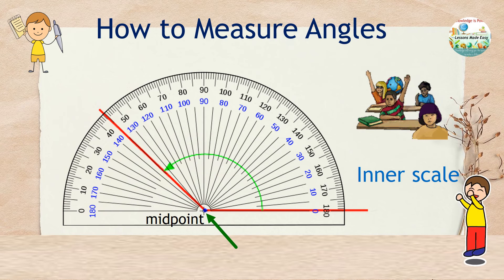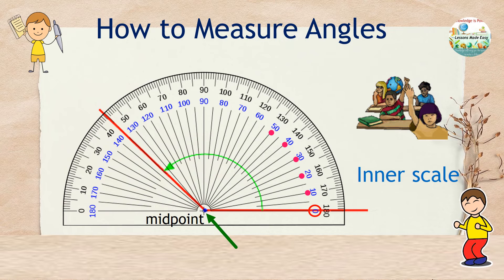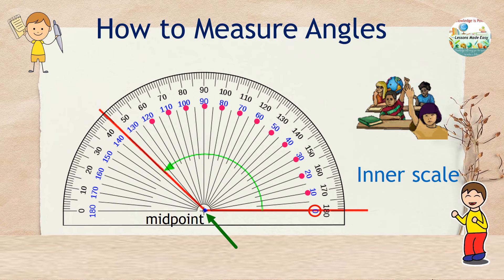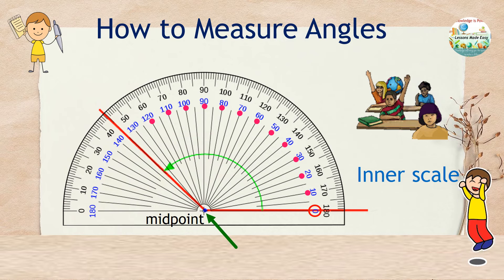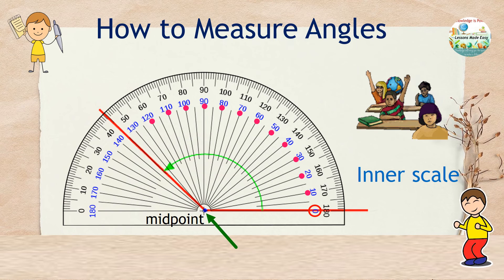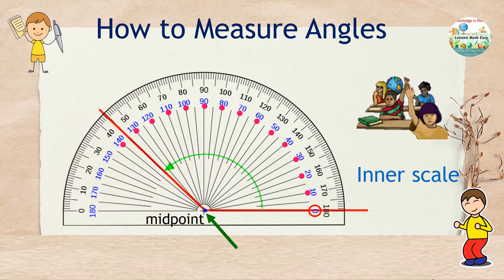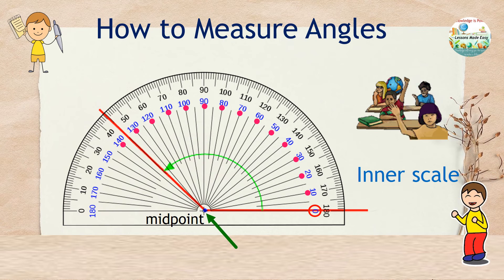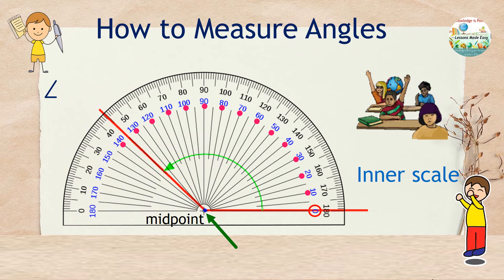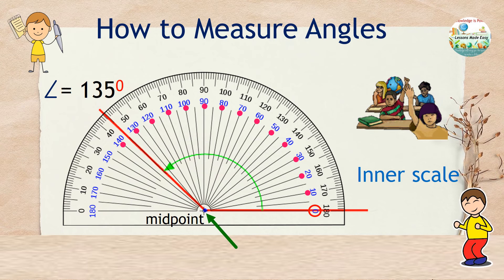Trace the side of the angle using the inner blue scale since our angle opens from the right. And read the measurement from 0, 10, 20, 30, 40, 50, and so on. If you notice, this angle goes between 130 and 140 degrees. So therefore, this angle has a measurement of 135 degrees.